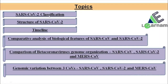First is SARS-CoV-2 classification. Second is structure of SARS-CoV-2. Third is timeline. Fourth is comparative analysis of biological features of SARS-CoV and SARS-CoV-2. Fifth is comparison of beta coronavirus genome organization — SARS-CoV, SARS-CoV-2, and MERS-CoV. And the last is genomic variation between these three groups.